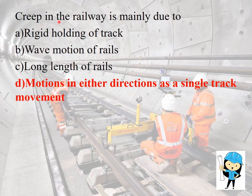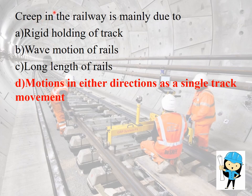The first question is: creeping of railway is mainly due to — rigid holding of a track, wave motion of the rails, coning of the rails, or motion in either direction as a single track movement? The answer is motion in either direction as a single track movement. Sometimes the option may be given as longitudinal movement of the railway in the track in the direction of motion of locomotives. Mainly, the creep occurs due to the impact of the wheel.